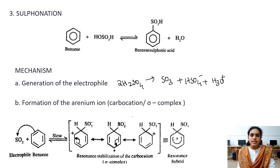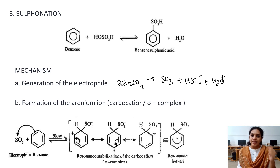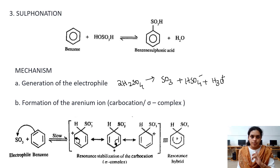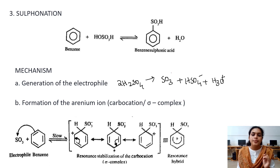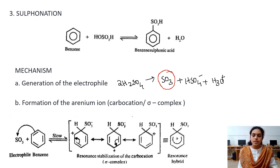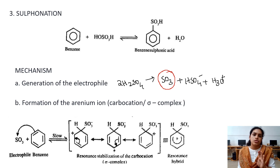Since this is an aromatic electrophilic substitution, the attacking reagent must be an electrophile. In halogenation the electrophile was X+, in nitration it was NO2+. Here, however, the electrophile SO3 is neutral but electrophilic — do not assign a positive charge to SO3.